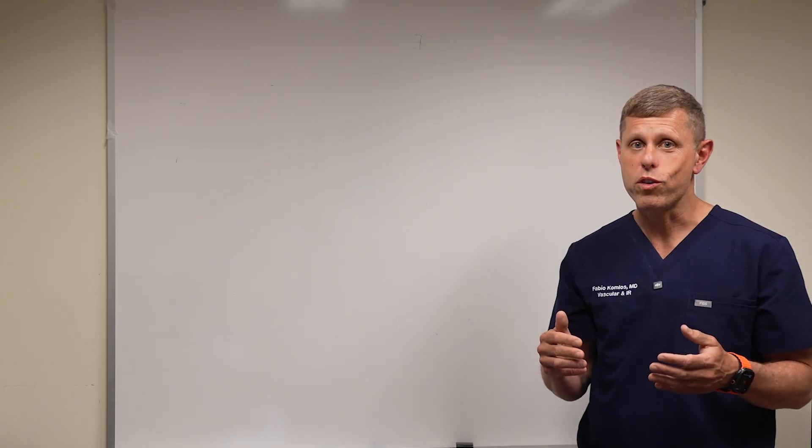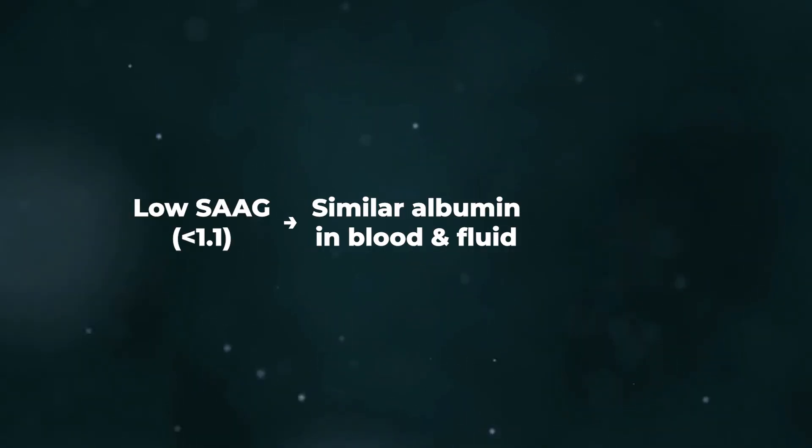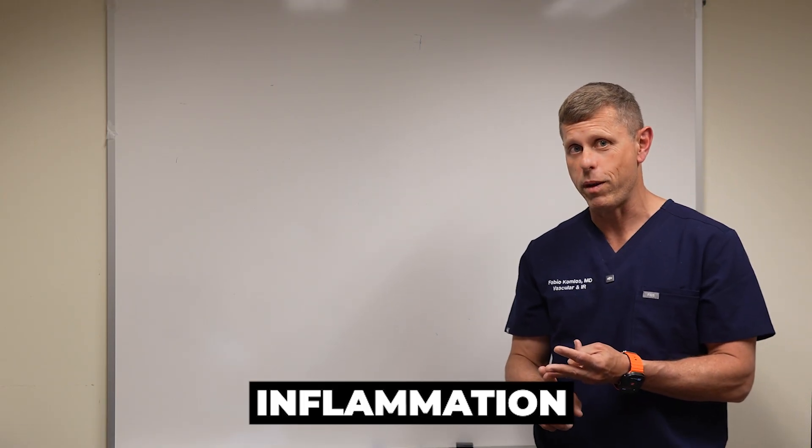That means most likely the reason for the fluid accumulation is the liver or the heart. But if the SAAG is less than 1.1, meaning the albumin in the blood and the albumin in the fluid are almost the same, that means you have an exudate. And now we have to look for cancer, infection, and inflammation.